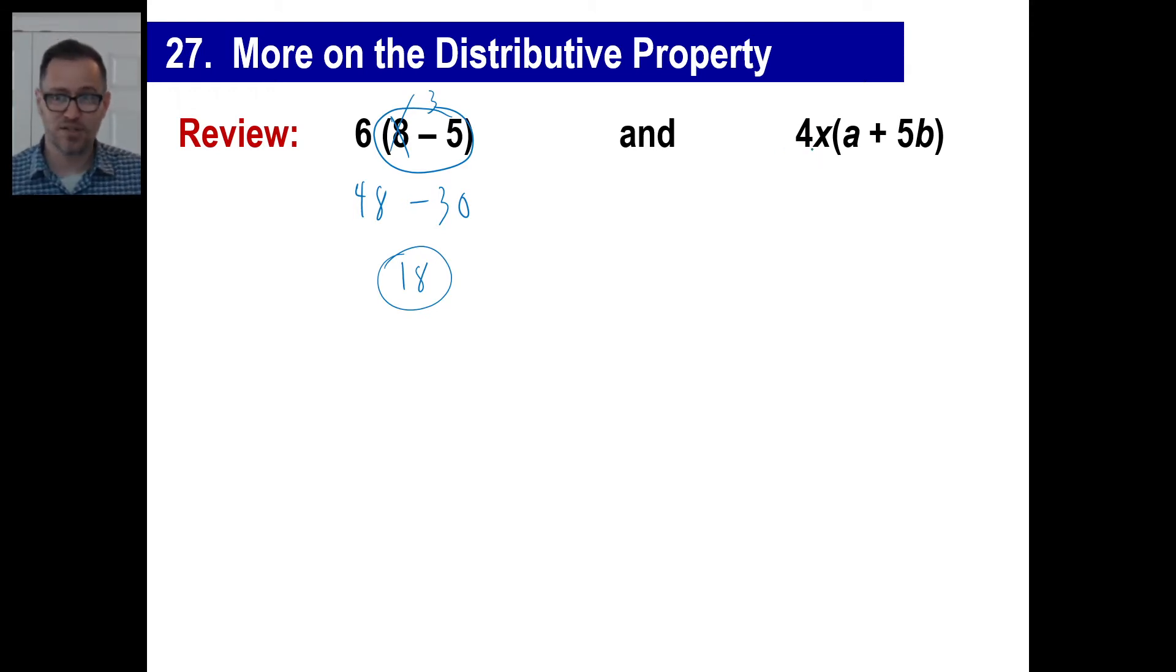If you have a 4x and you distribute that, you will do one at a time. 4x times a turns out to be that. 4x times 5b, well, 4 times 5 is 20, x times b is xb. Boom. You're done. We know how to do this, right?